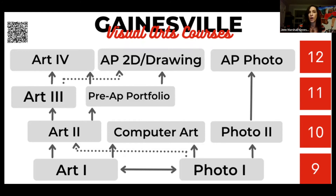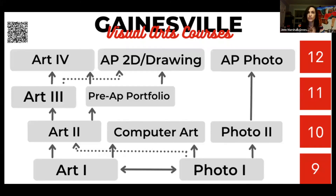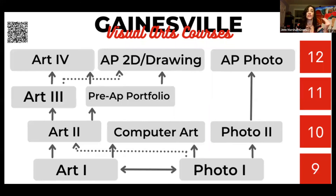On the photography side, after Photo One you can take Photo Two, where you develop the skills from Photo One — portrait work and all the different things you're learning — creating more personal-based series. That also leads up to AP Photo, where you're creating a series of your own work, whether purely photography or combining photography with digital. If you have any questions, feel free to email me. I do portfolio reviews, so if you're a sophomore with a high skill level and would like to enter Pre-AP Portfolio next year, send me an email and I can review your portfolio to determine if you'll be successful at that level.